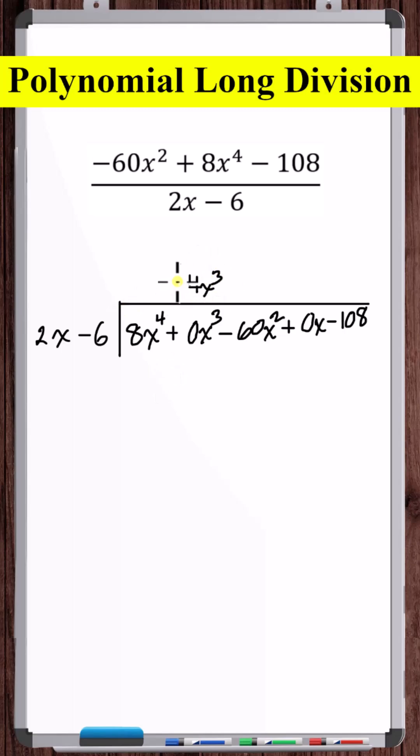Now multiply 4x cubed by the divisor. Subtract these two expressions. 0x cubed plus 24x cubed is 24x cubed. Bring down the minus 60x squared.